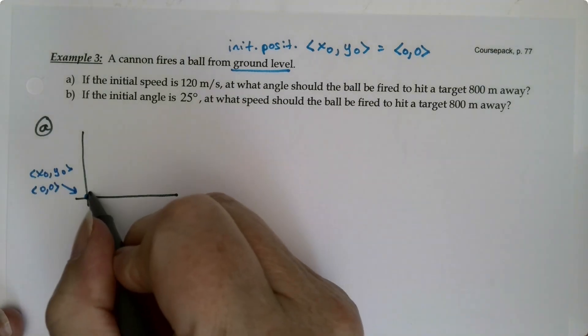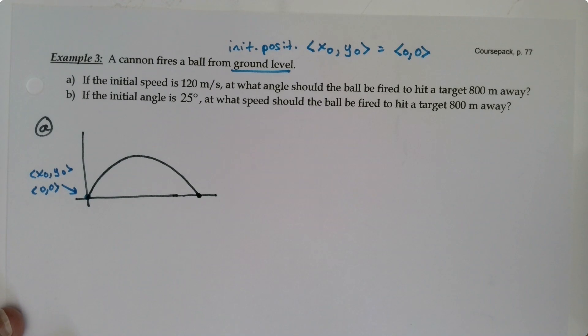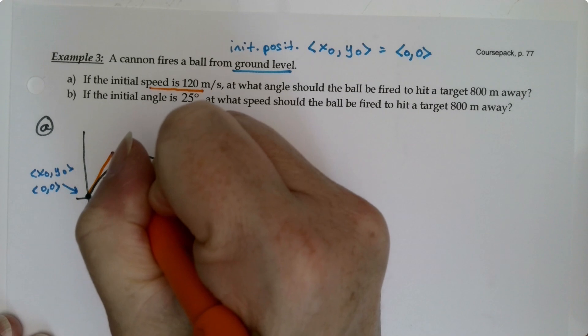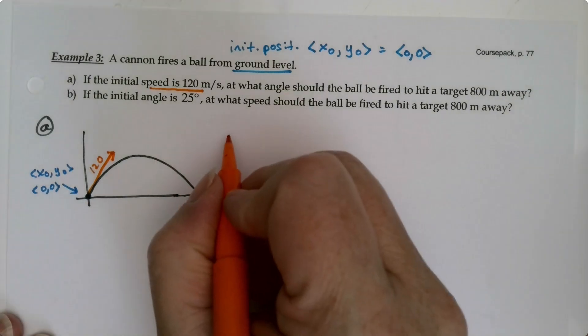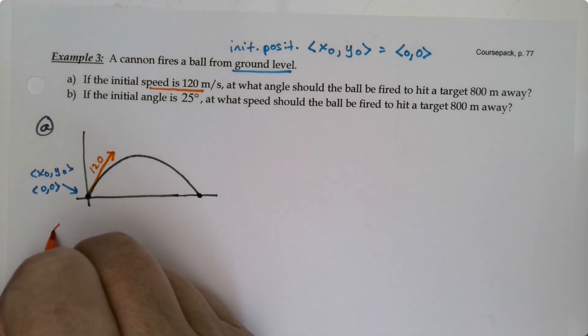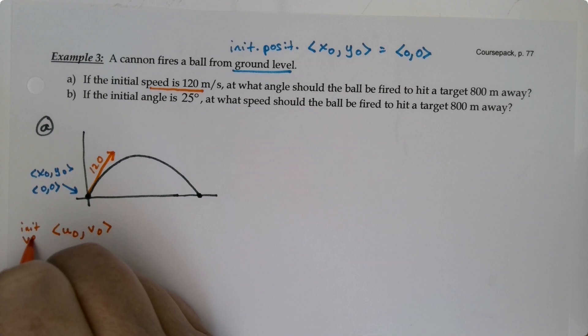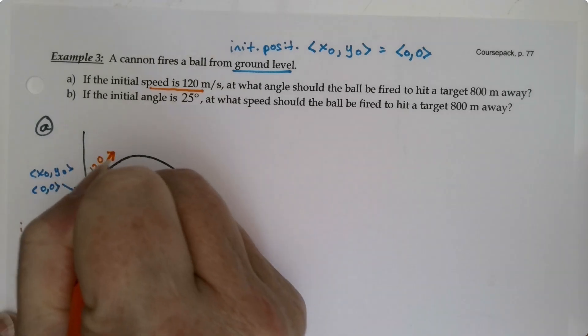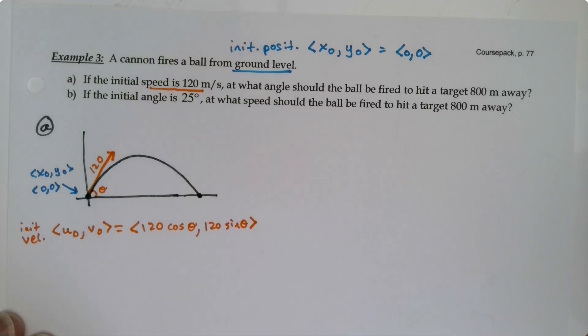So we're going to fire from down here. So there's our initial position. So x0, y0 is 0, 0. Then we're going to shoot the cannonball up in the air. It'll go up and then it'll go back down and land over here. Then they're telling us that when it fired, it fired with a magnitude of 120 meters per second. So it's firing in this direction and the magnitude of that vector is 120. That means that u0 and v0, the initial velocity, would be 120 cosine of whatever angle this is. So cosine of theta, 120 sine of theta.